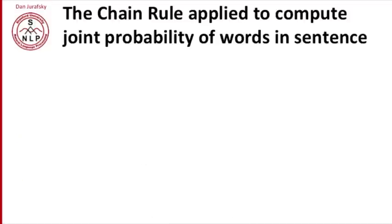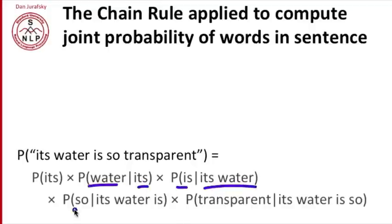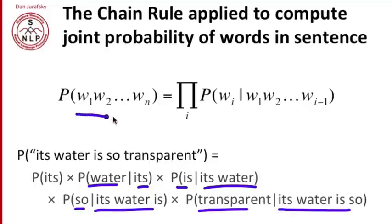So now the chain rule can be applied to compute the joint probability of words in a sentence. Let's suppose we have our phrase, its water is so transparent. By the chain rule, the probability of that sequence is the probability of its times the probability of water given its times the probability of is given its water times the probability of so given its water is, and finally times the probability of transparent given its water is so. Or more formally, the probability of a joint probability of a sequence of words is the product over all i of the probability of each word times the prefix up until that word.